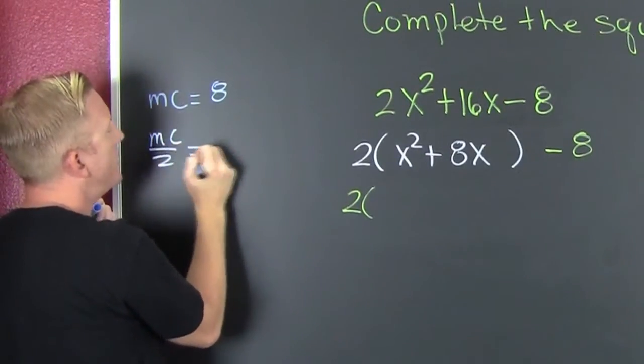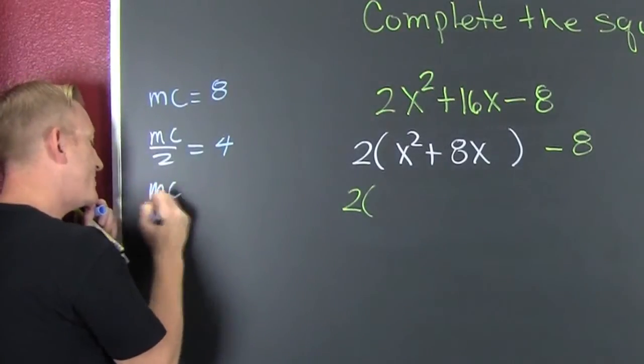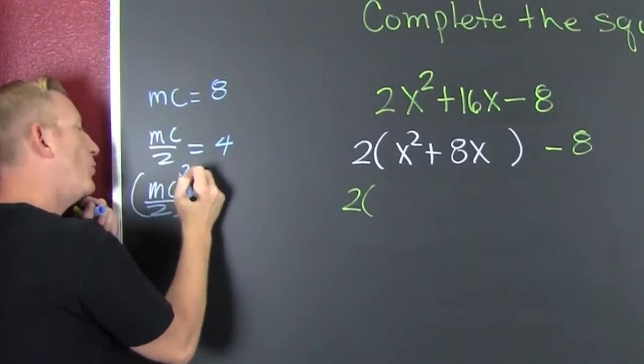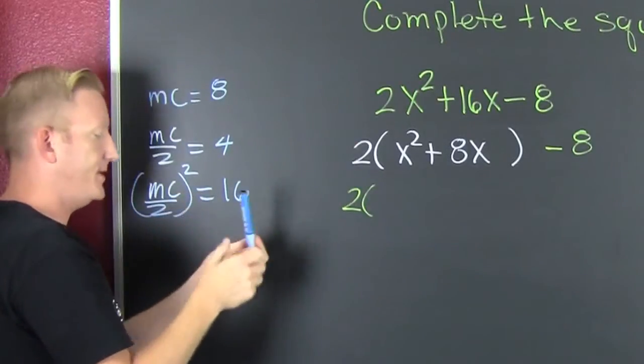Middle coefficient over 2 is 4. The middle coefficient over 2 squared is 16. That's what you're going to add and subtract on the inside.